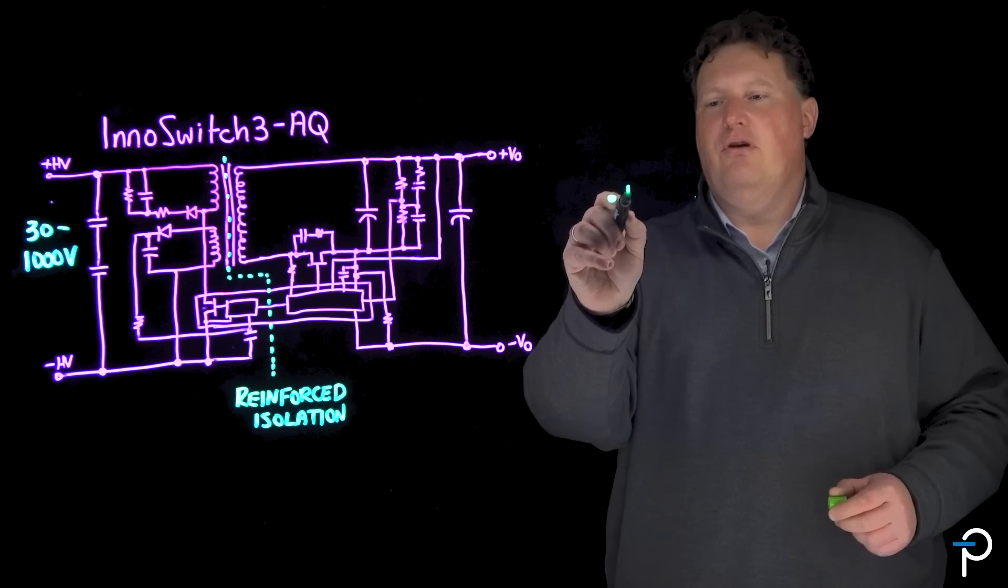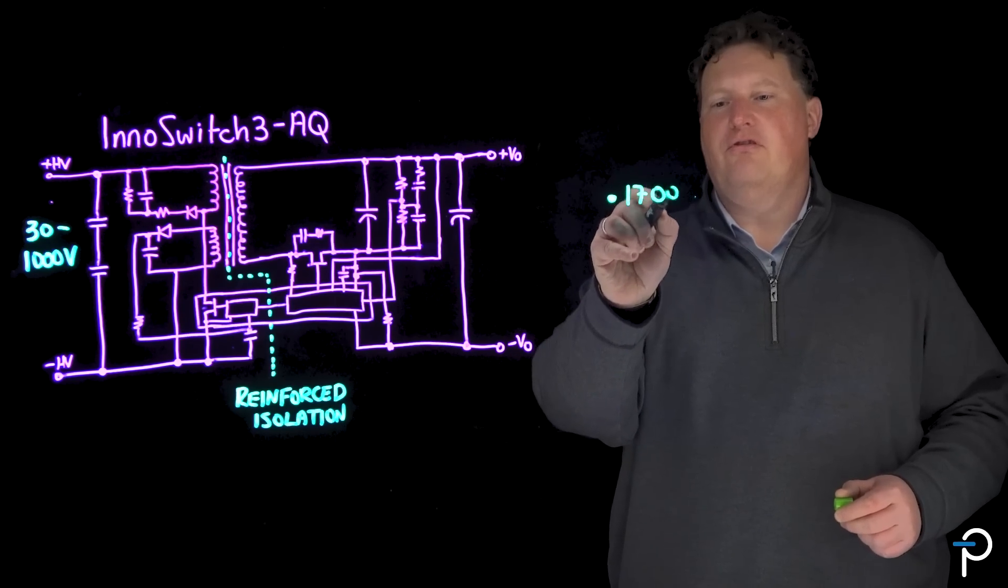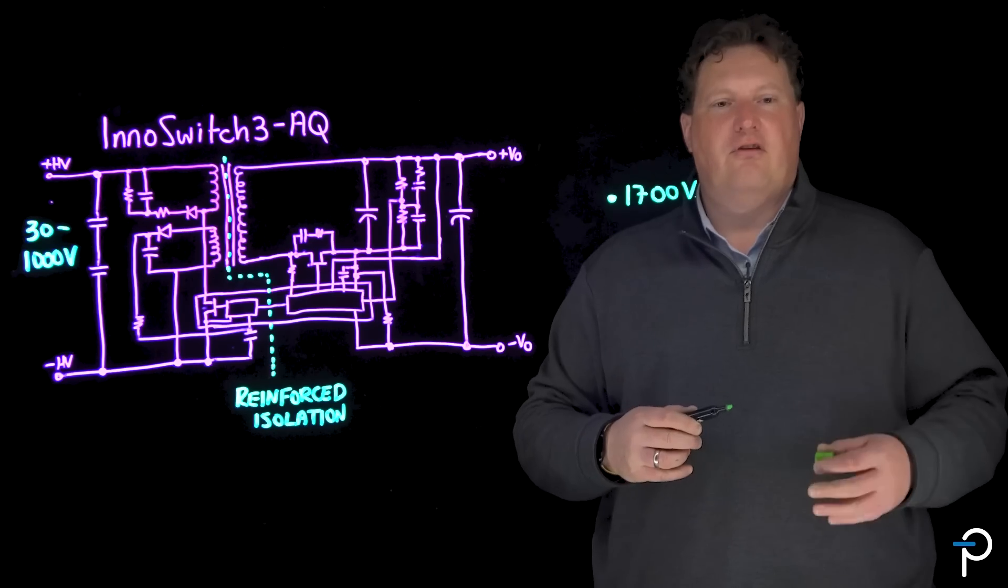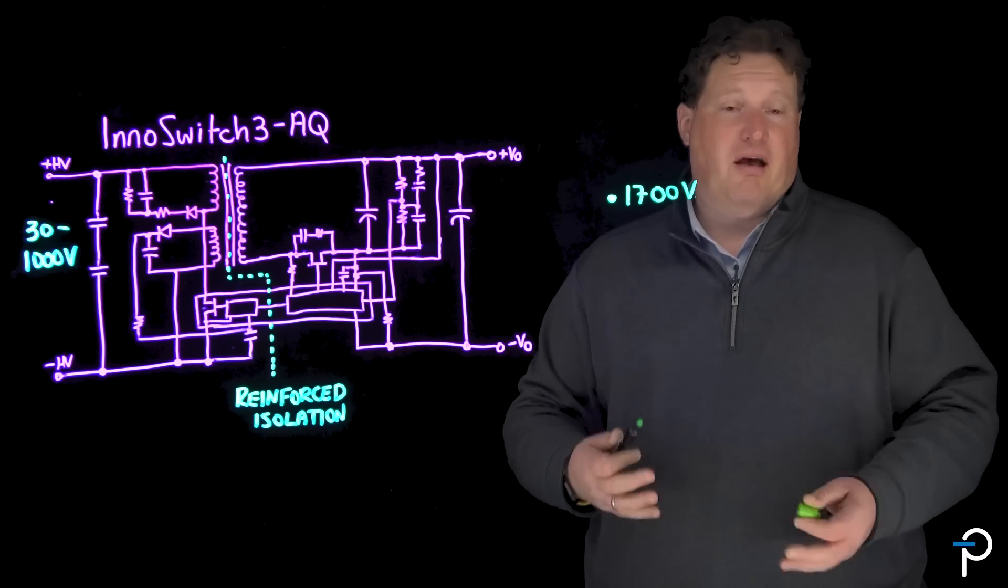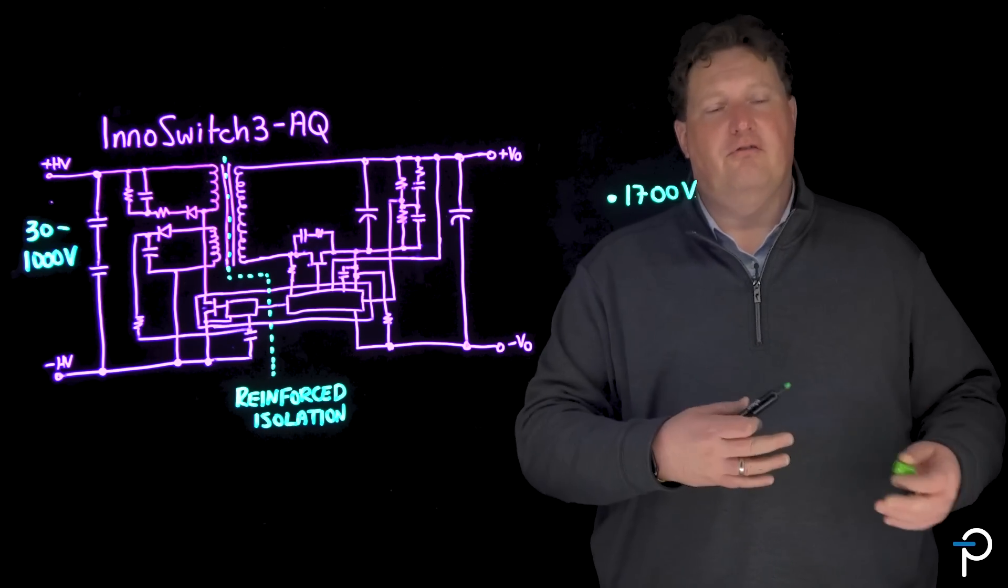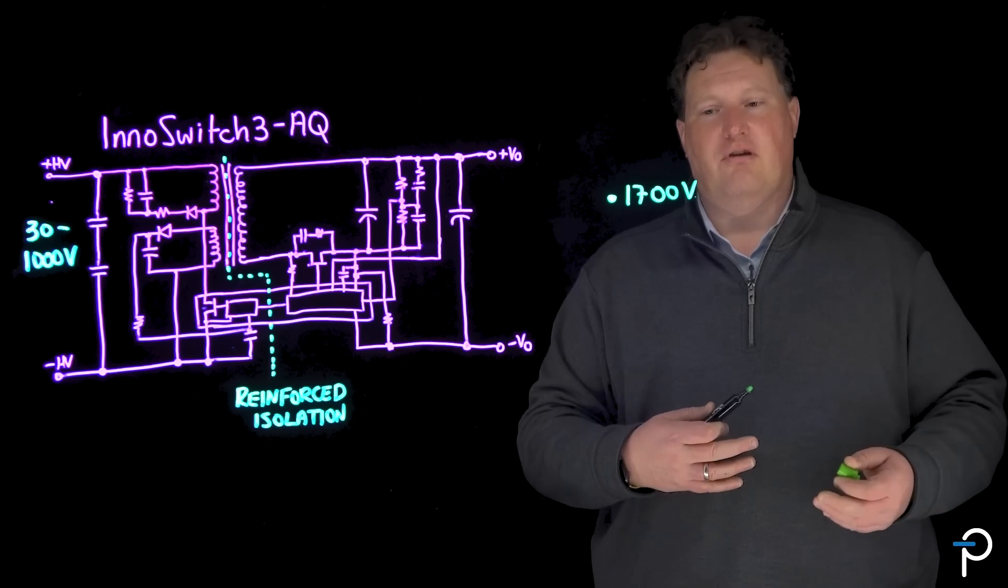1700 volts is ideal for automotive system voltages of 600 and 800 volts and above for vehicles like passenger vehicles, buses, and trucks, whether fuel cell or battery electric.